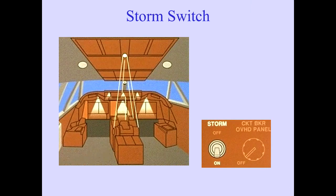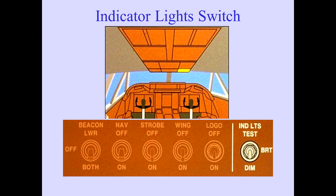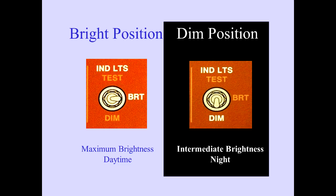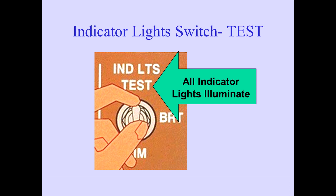The storm switch is a light override switch. When on, dome lights illuminate at maximum intensity and flight deck lights illuminate to full intensity, overriding normal lighting controls. The indicator light switch, located on the overhead panel, controls the intensity of flight deck indicator lights and provides a test function. When held in the test position, all indicator lights illuminate.